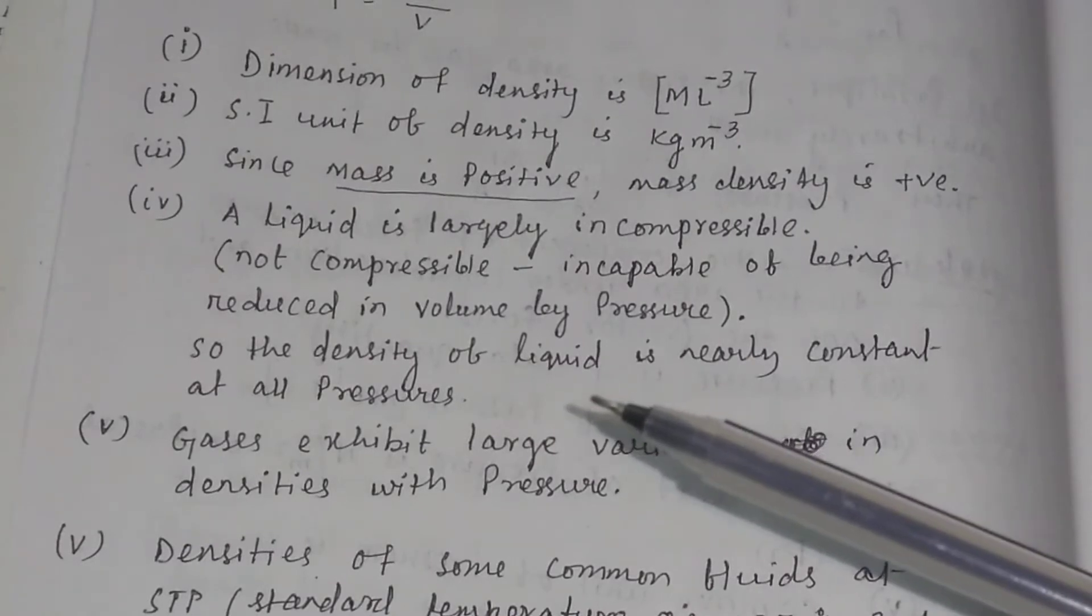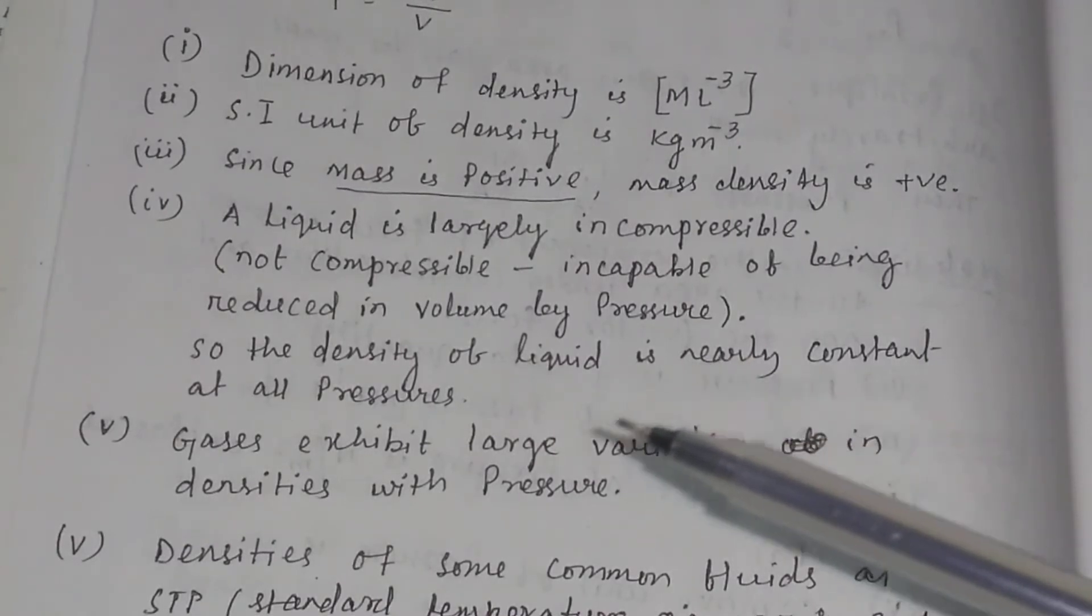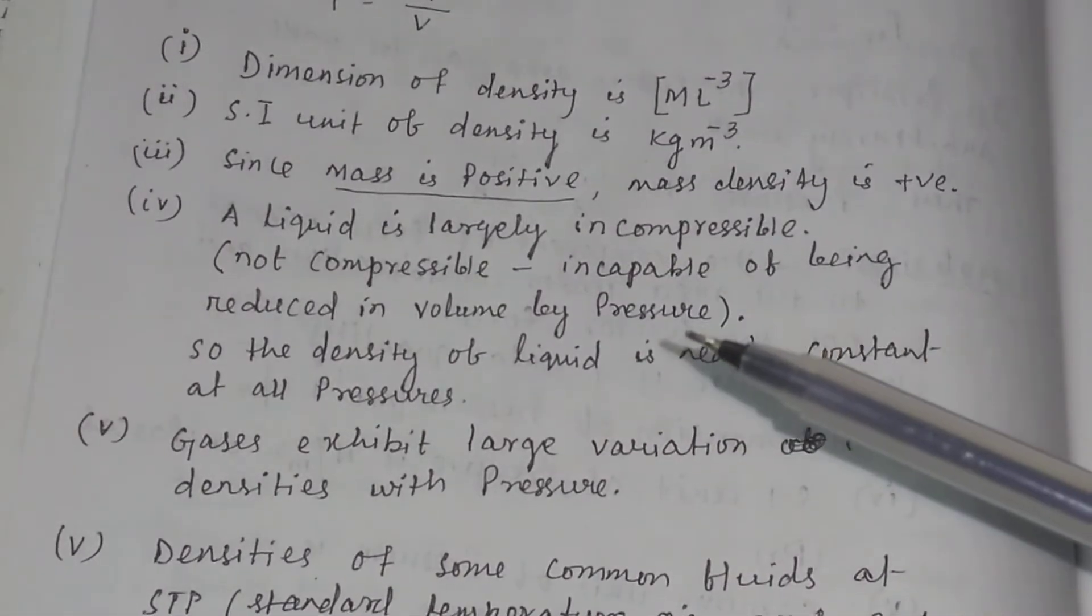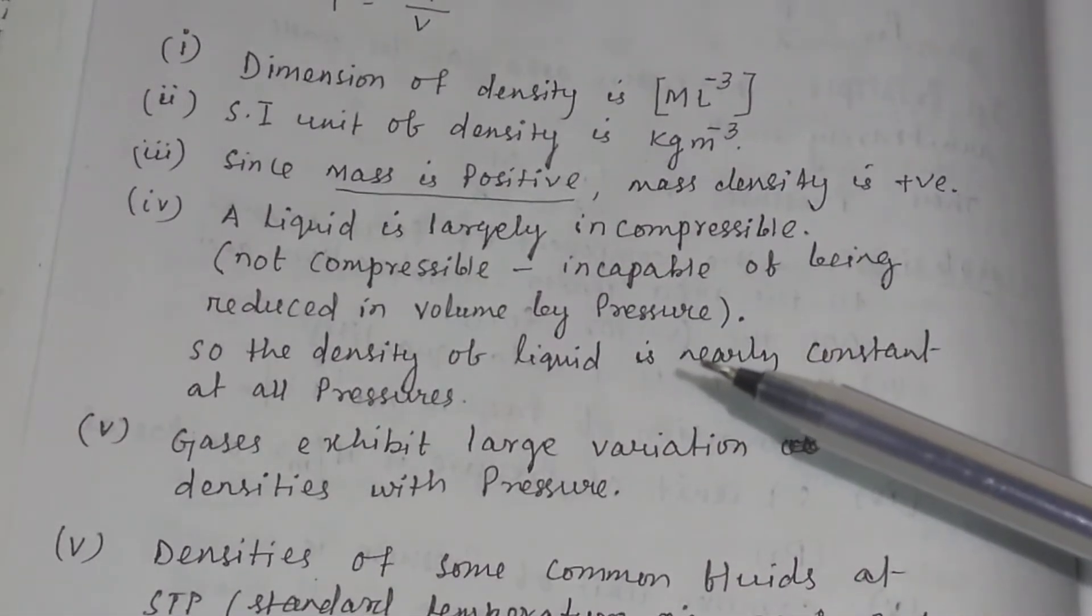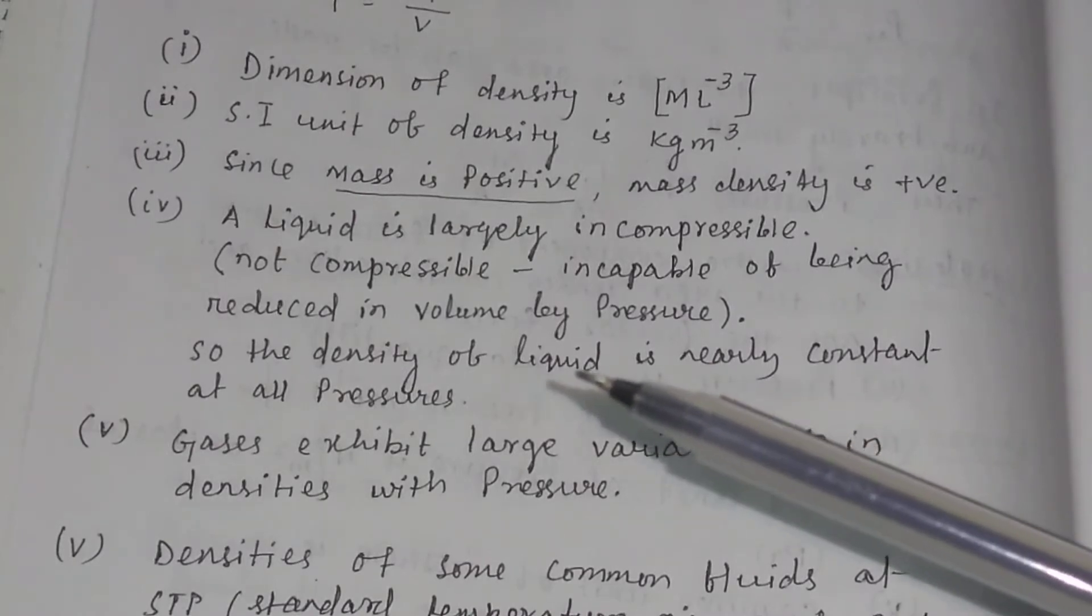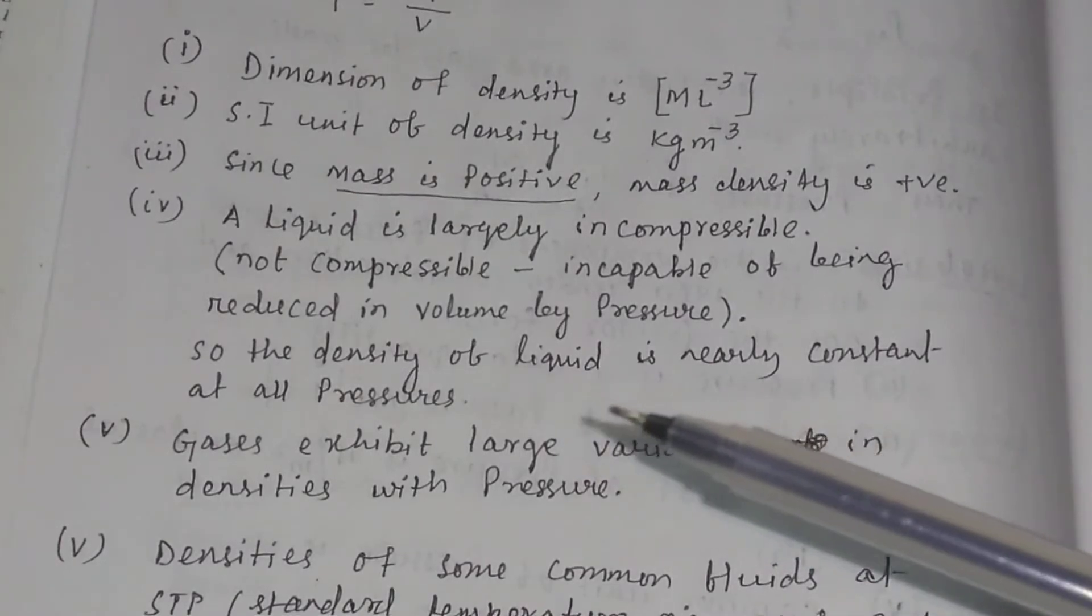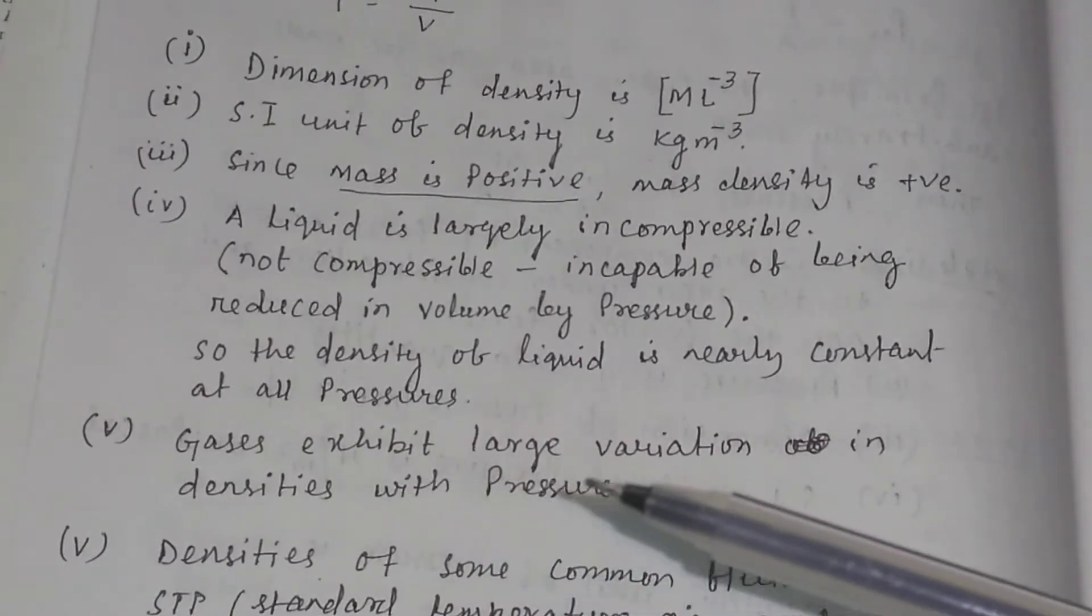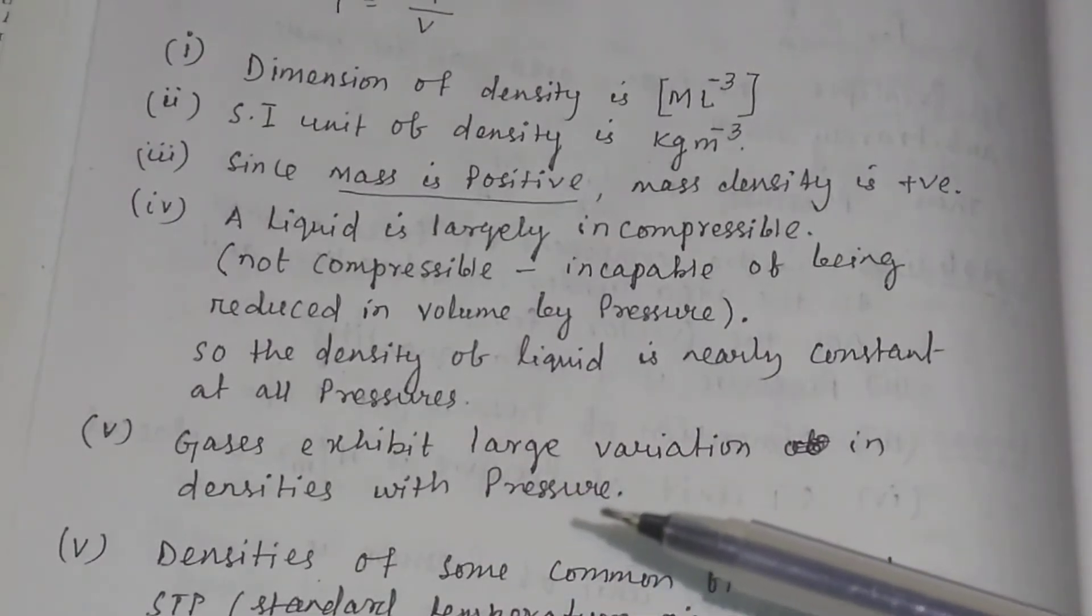So in case of liquid also, the atoms are rigidly bound. That is why by giving or applying small amount of pressure, the atoms will not be very close to each other. So the density of liquid is nearly constant at all pressures. But gases exhibit large variation in densities with pressure.